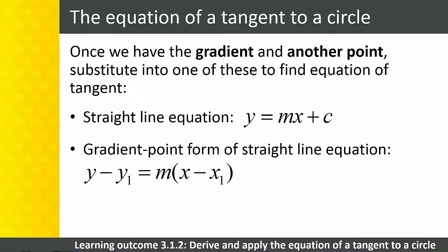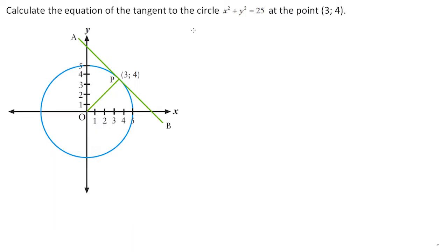Let's work through an example. Calculate the equation of the tangent to the circle x² + y² = 25 at the point (3, 4). The equation of a tangent is the equation of a straight line in the form y = mx + c. We need to find two variables: the gradient M, and C, the y-intercept.